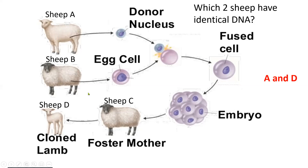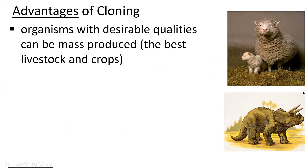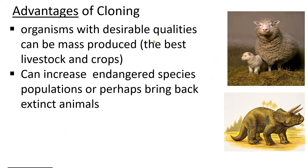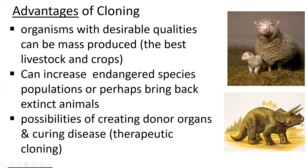Advantages of cloning: if you have an organism with desirable qualities, you can mass produce it and those qualities are guaranteed to be present. This might be good for livestock and crops. It could also help increase endangered species populations, or possibly bring back extinct animals — though we all know how Jurassic Park ended. There's also the possibility of creating donor organs through therapeutic cloning, which is more realistic and a major reason why we research biotechnology cloning.